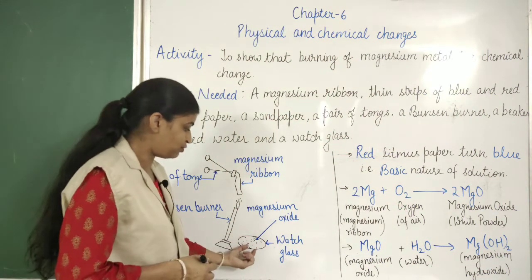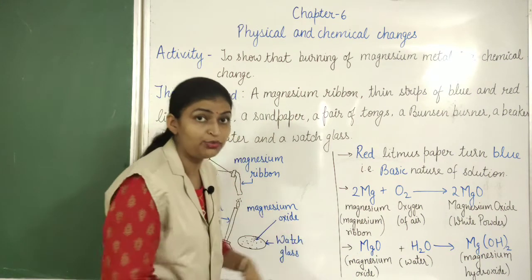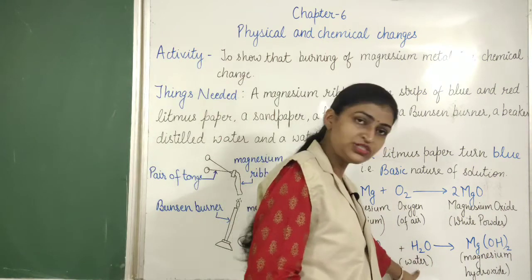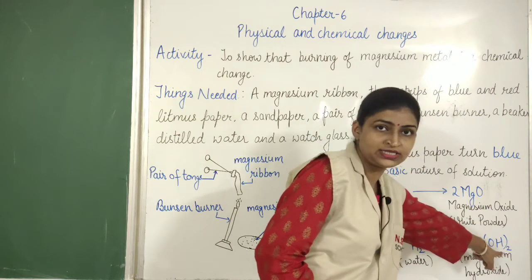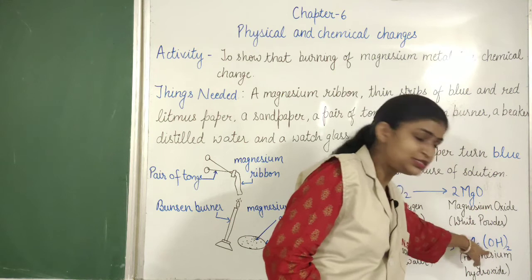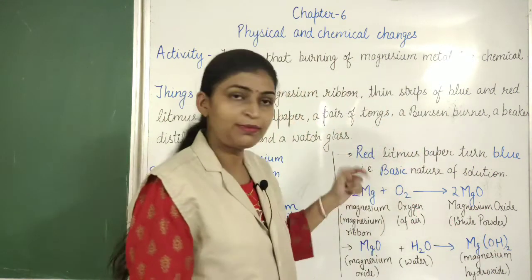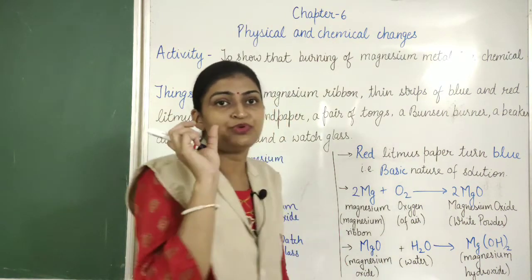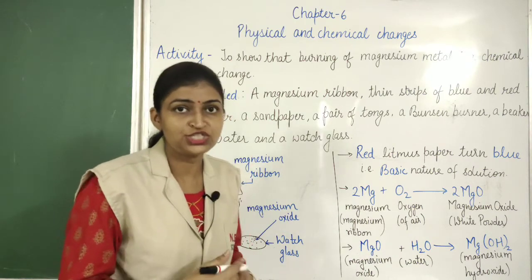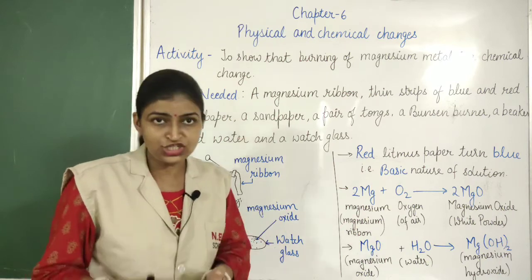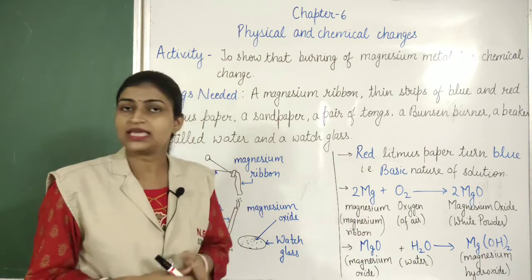When we dissolve MgO in water, what happens? This MgO, magnesium oxide, reacts with H2O — that means water — and gives us Mg(OH)2. The OH means this is basic in nature because it is hydroxide. This is magnesium hydroxide, and the OH ion is present in a base only. That means the solution prepared by dissolving MgO in H2O will be basic in nature.